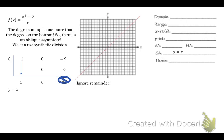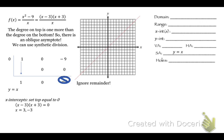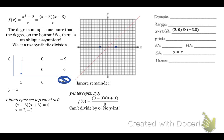Now I'm going to go through the same steps to find everything else. X-intercept: set the top equal to 0. Factor the top — it factors to (x minus 3)(x plus 3). The bottom is just x. Nothing cancels, so there are no holes. Set each factor equal to 0: x equals 3 and x equals negative 3. So the x-intercepts are (3, 0) and (negative 3, 0). For the y-intercept, plug in 0 — but we're dividing by 0, so there is no y-intercept.